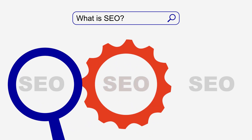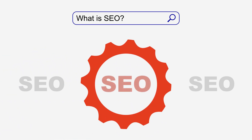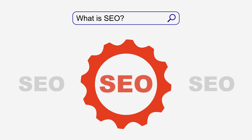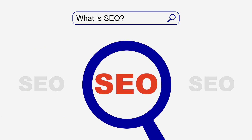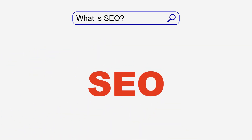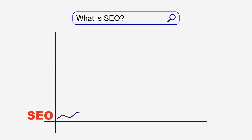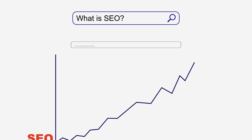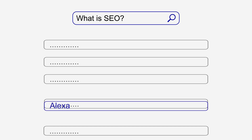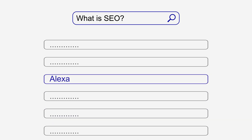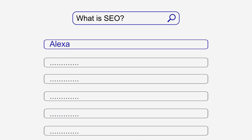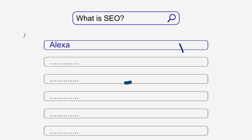SEO is the process of optimizing your content in a way that is easy for the search engines to show. SEO is the most used organic method to generate revenue and credibility for your brand. SEO helps your content and website to rank at the top of the search results.